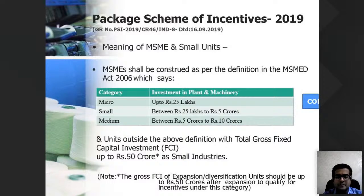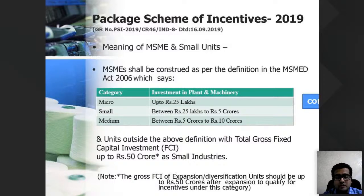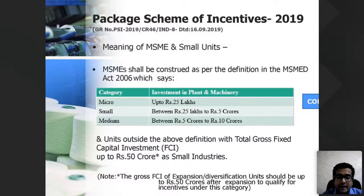The MSME definition applicable in Maharashtra: investment in plant and machinery up to 25 lakhs is classified as micro; from 25 lakhs to 5 crore is small; and from 5 crore to 10 crore is medium. Note that the Maharashtra state government has not yet released a revised GR for the new MSME definition, so the earlier definition as per the MSME Act still applies for state subsidies.